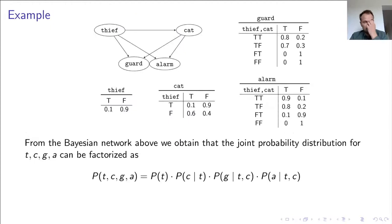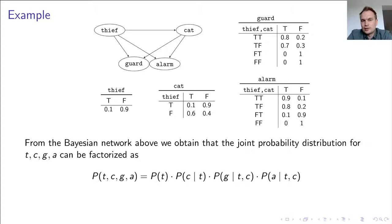Let us look at an example of using our logic. Here we have a Bayesian network comprising four nodes, one node per random variable. From the topology of such a network, one readily obtains a factorization of the underlying joint probability distribution. This factorization reflects the conditional independencies encoded in such a network, and these conditional independencies can be seen as atomic statements of our probabilistic independence logic.